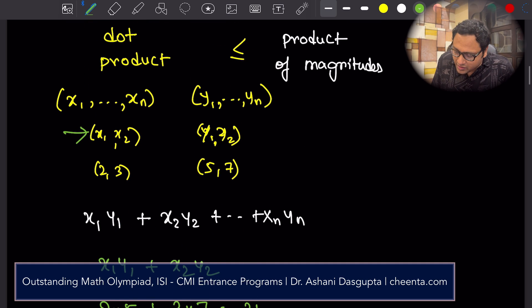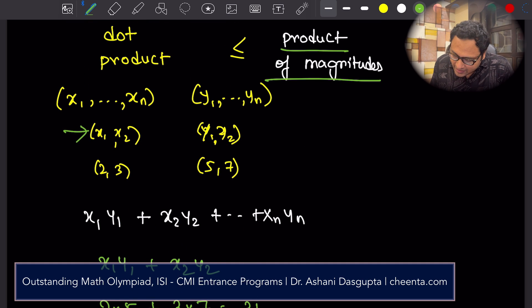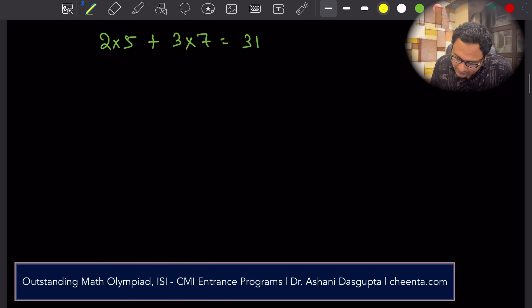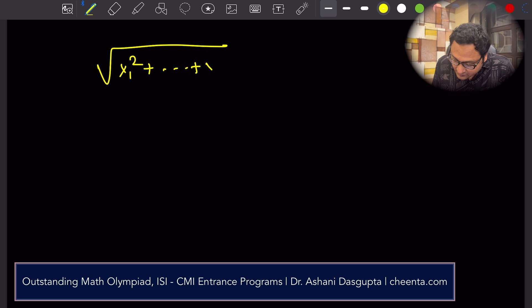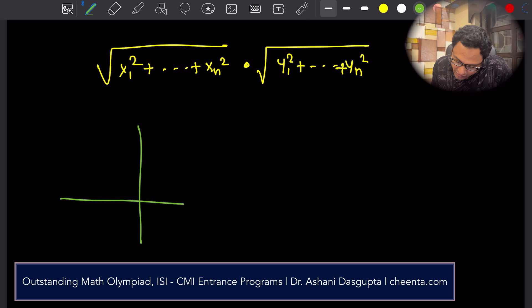What is the product of magnitudes? Well, it is square root of x1 square up to xn square times square root of y1 square up to yn square. So, if you have a point in the two-dimensional plane, let's suppose this point is x1, x2.